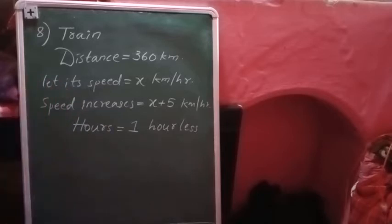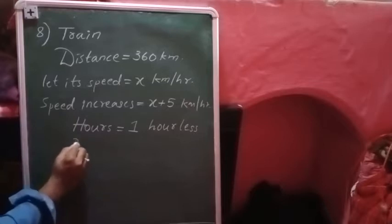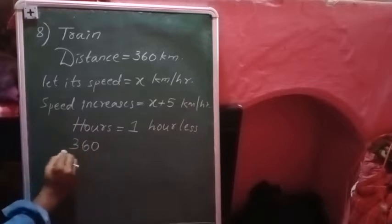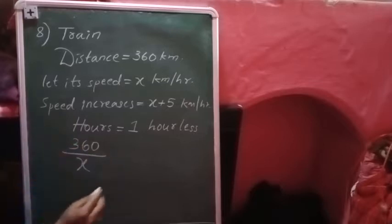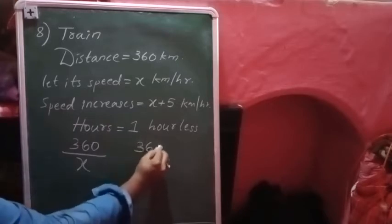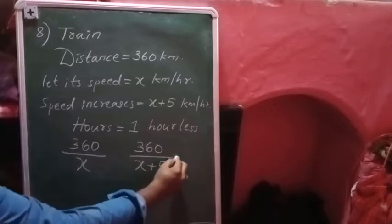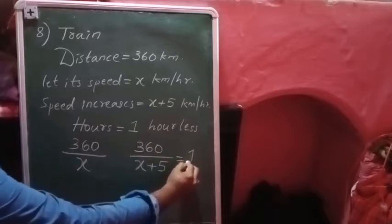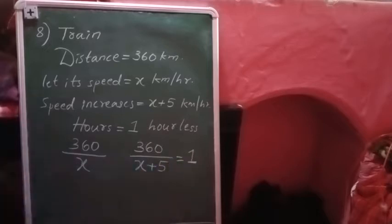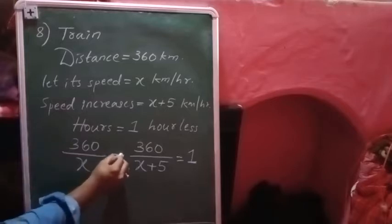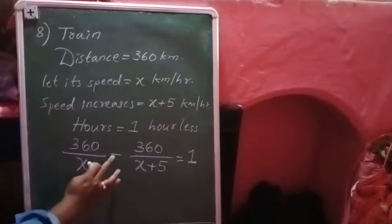The arranging of the equation is very important here. First, distance divided by speed: 360 divided by x. Then here also you should write 360 divided by x plus five, because the speed has increased, which equals to one hour time. This side, less is there. So whenever less is there, the middle sign will be minus. If they gave you one hour more, the sign should be plus.